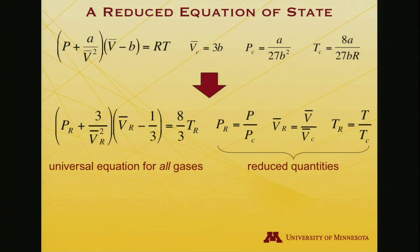So when I do that, when I rewrite the equation of state, not using a and b, because by inserting, by doing these divisions by the critical parameters which involve a and b, all of the a and b terms drop out entirely equivalently to the derivation on the last slide. So you end up with this universal equation for all gases that the reduced pressure plus 3 divided by the reduced molar volume squared times the quantity reduced molar volume minus a third is equal to 8 thirds times the reduced temperature.